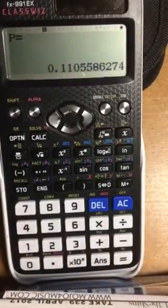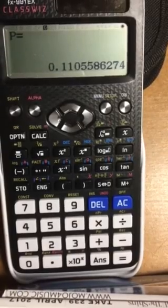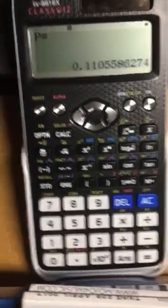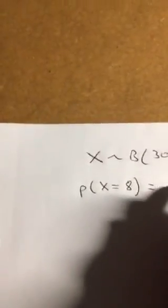There we can see the answer is 0.110558, etc. So I can say the answer is 0.111 to 3 sig figs.